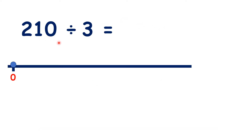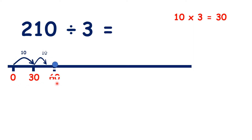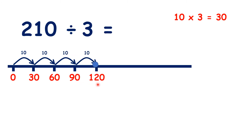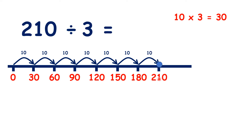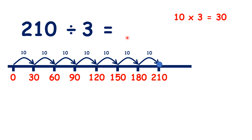So what is 210 divided by 3? Well, 10 times 3 is 30, so let's count up in steps of 30. We have 30, 60, 90, 120, 150, 180, and 210. So we counted 7 steps of 10 times 3. Because 7 tens is 70, we know that 210 divided by 3 is 70.